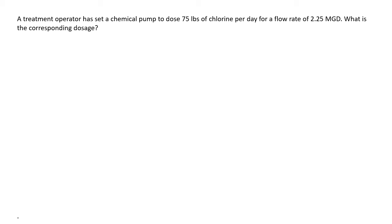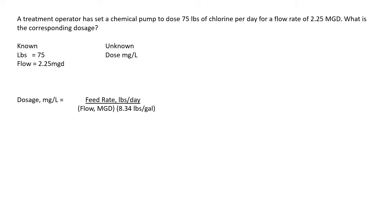A treatment operator has set a chemical pump to dose 75 pounds of chlorine per day for a flow rate of 2.25 MGD. What is the corresponding dosage? Pulling our knowns and unknowns: the pounds is 75, the flow is 2.25 MGD, and what we don't know is the dose. To solve for dosage in milligrams per liter, it equals the feed rate pounds per day divided by flow MGD times 8.34 pounds per gallon. Plugging in: 75 pounds per day divided by 2.25 MGD times 8.34 pounds per gallon.